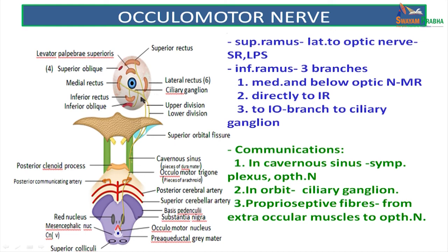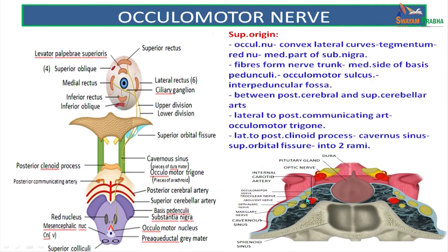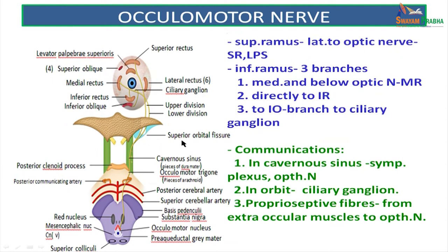The oculomotor nerve enters the cavernous sinus and divides into two rami which enter the superior orbital fissure through the tendinous ring. In the cavernous sinus, the oculomotor nerve is related to the trochlear nerve just above it. The inferior ramus divides into three branches supplying the medial rectus, inferior rectus and inferior oblique. A branch from the inferior oblique is relayed into the ciliary ganglion, which carries parasympathetic fibres of the Edinger-Westphal nucleus. The ciliary ganglion is present between the lateral rectus and the optic nerve. Communications include the sympathetic plexus around the internal carotid artery and proprioceptive sense from all extraocular muscles to the ophthalmic nerve.